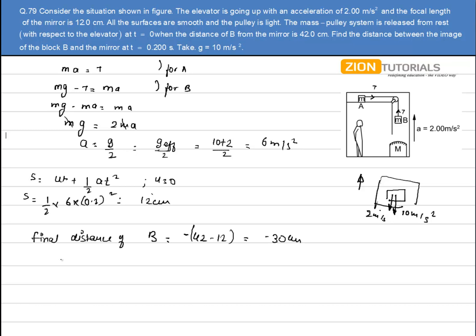Now since it is a convex mirror, the focal length is given as 12 centimeters. Now just simply use the mirror equation 1 by v plus 1 by u is equal to 1 by f. The value of v, that is what I have to calculate, 1 by v minus 1 by 30 equals 1 by 12. So the value of v comes out to be 8.5 centimeters. That is my answer because that is the value of the image distance from the pole of the mirror.